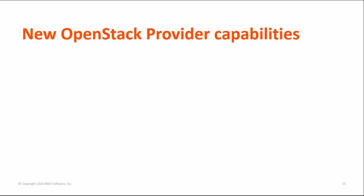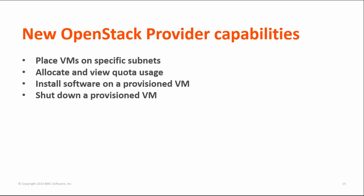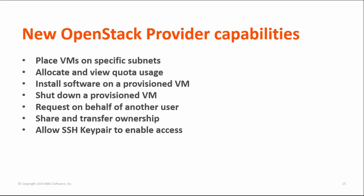OpenStack providers can now place VMs on specific subnets of an OpenStack virtual network, allocate and view tenant and user quota usage for OpenStack provider users in BMC Cloud Lifecycle Management, install software on a provisioned VM, shut down a provisioned VM in OpenStack, request an OpenStack cloud service on behalf of another user, share and transfer ownership of an existing OpenStack cloud service, and allow SSH KeyPair to enable access to a VM provisioned in the OpenStack cloud, for example CloudWatt.